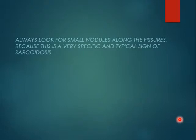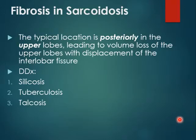In the later stages of sarcoidosis, like the fibrotic Stage 4, the typical location is posteriorly in the upper lobes. Fibrosis causes volume loss of the upper lobes, resulting in displacement of the interlobar fissure posteriorly and medially. The differential diagnosis in this case includes silicosis, TB, and talcosis.